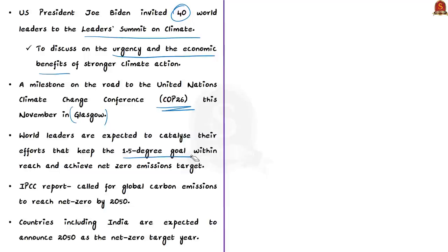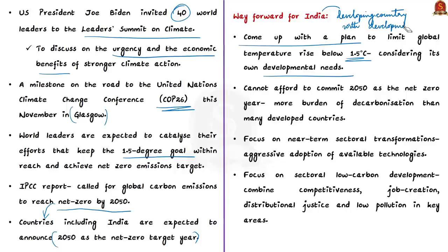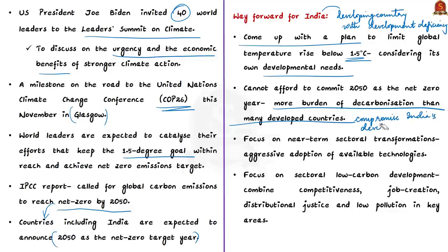A recent IPCC report called for global carbon emissions to reach net zero by 2050, meaning all countries including India are expected to announce 2050 as the net zero target year. The editorial authors say India, being a climate-vulnerable country, must come up with its plan to limit global temperature rise below 1.5°C considering its own developmental needs, as India is still a developing country with significant development deficits. For example, India's per capita carbon emissions are less than half the world average. India cannot commit to 2050 as the net zero year without taking on more burden than many developed countries, which would compromise its development needs.